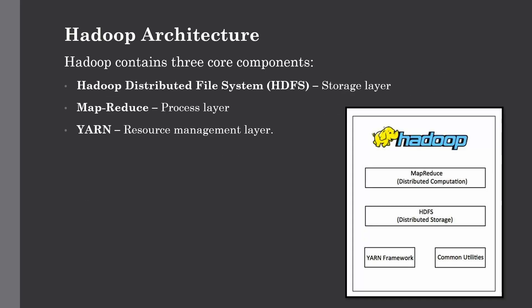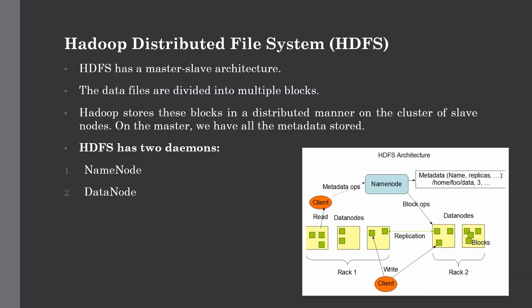Now let's discuss Hadoop architecture. Hadoop contains three core components: HDFS (Hadoop Distributed File System), which is the storage layer for Hadoop; MapReduce, which is the processing layer; and YARN, which is the resource management layer. We will discuss each of these components in detail. The main component of Hadoop is HDFS — the Hadoop Distributed File System — which serves as the storage layer.